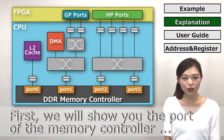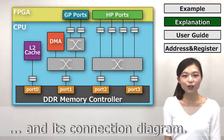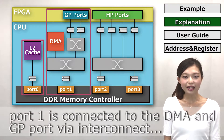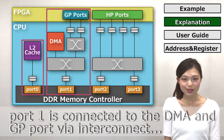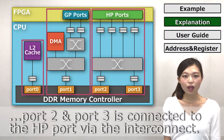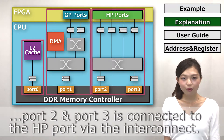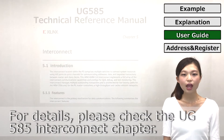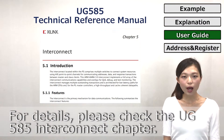First, we will show you the parts of the memory controller and its connection diagram. Port 0 is connected to the L2 cache. Port 1 is connected to the DMA and GP part via the interconnect. Port 2 and Port 3 are connected to the HP part via the interconnect. For details, please check the UG585 interconnect chapter.